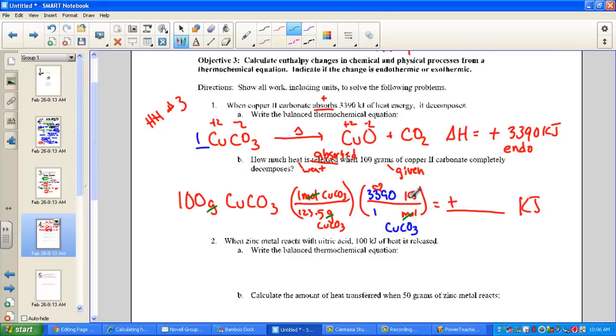Hit with me. 100 grams divided by the molar mass of 123.5, times the heat content 3390. And I find a value of 2744.9 kilojoules. We divide, we ratioed, and we stopped. No step 3, just a step 1, step 2, we end with kilojoules.